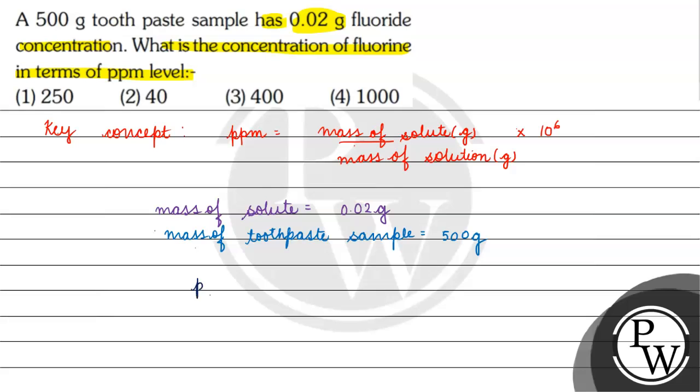For parts per million, the concentration in parts per million equals 0.02 by 500 into 10 to the power 6.